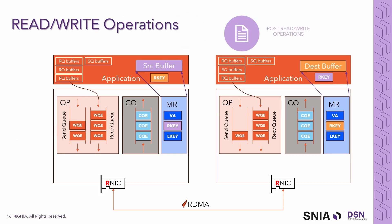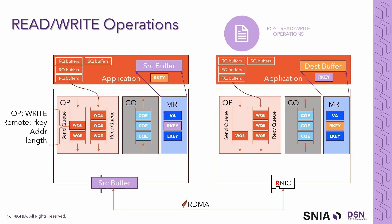Now it's time to post read and write operations. Let's give an example of a write. This is done by posting write WQEs towards the RNIC — a write operation from the local buffer represented by an L-key, to be sent remotely to a destination buffer represented by the orange R-key. The RNIC processes the WQE, DMAs the data into its local memory, packetizes it, and sends it over to be placed by the remote RNIC in its final destination. When done, a CQE — completion queue entry — is written to the host application to let it know it's done, either on the sender side, receiver side, or both, as requested. Similarly, this can also be done for reads.